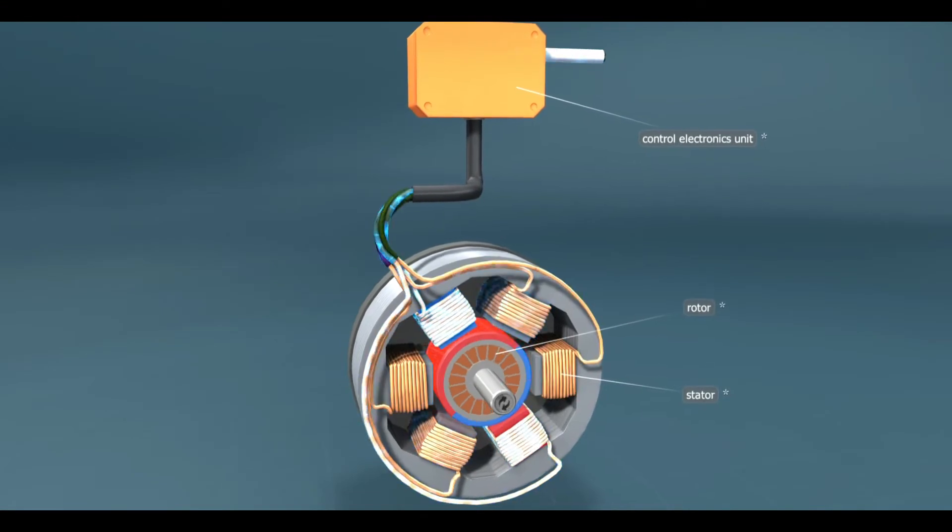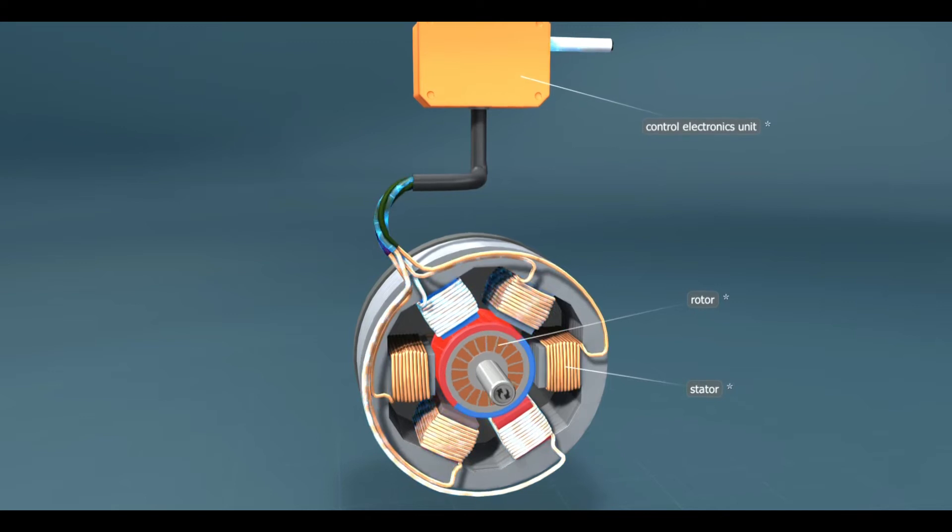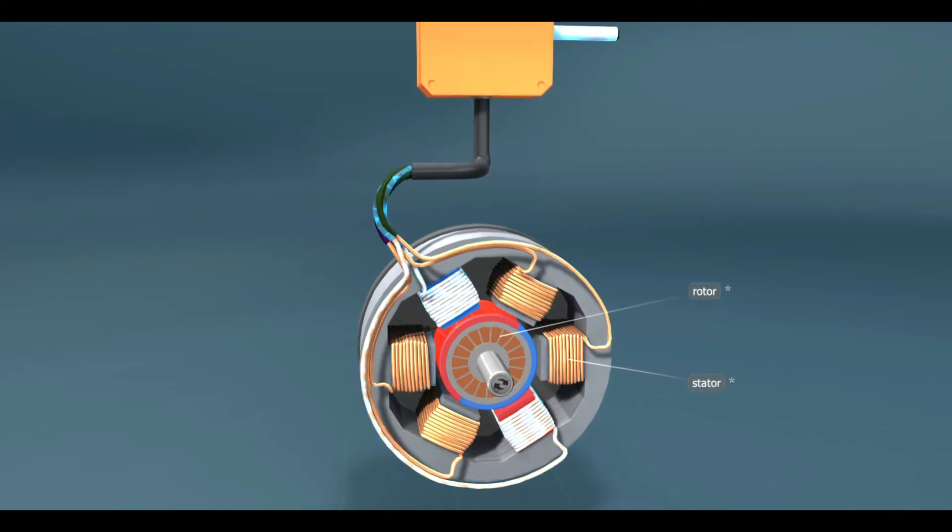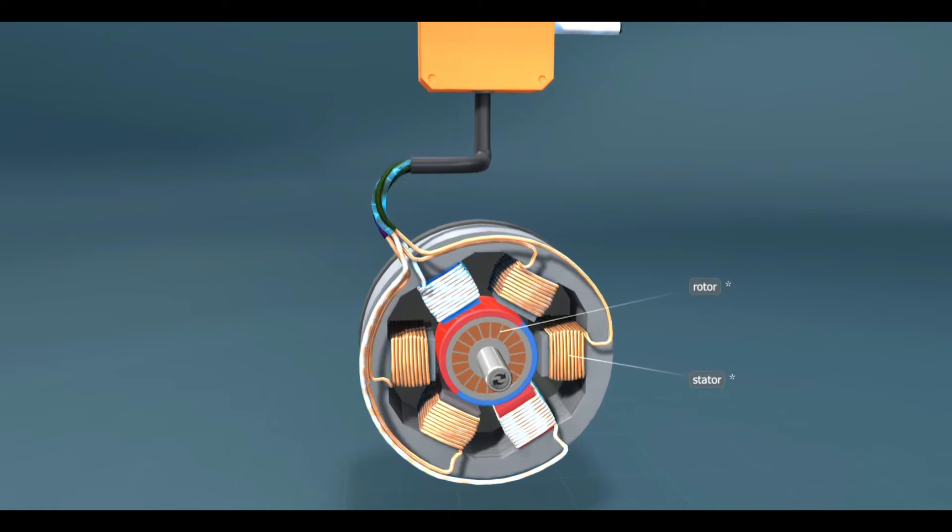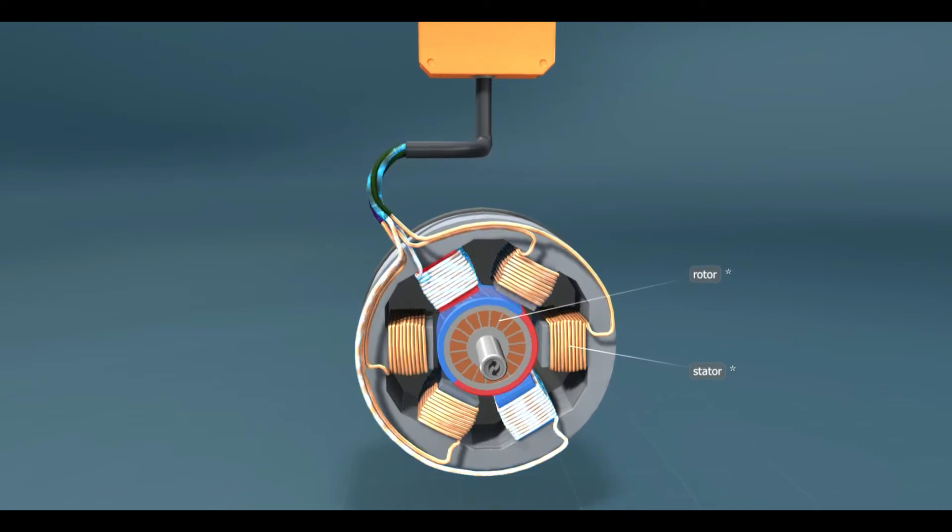The principle of operation of asynchronous motors is based on the phenomenon of induction. They also contain two fundamental parts, a stator and a rotor. The stator consists of several coils, to which an alternating current is applied.